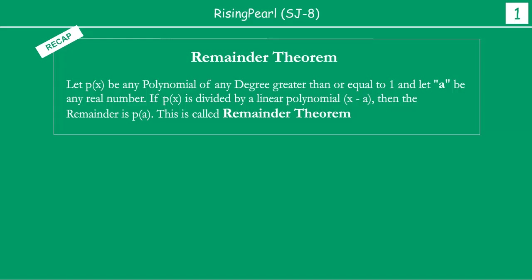Like we did last time, we will start by discussing what the remainder theorem is. The remainder theorem states that agar aapko ek polynomial dee jati hai p(x) such that it is of any degree greater than or equal to 1, and maan lijiye a is any real number, then agar if you divide the polynomial p(x) by a linear polynomial x minus a, the remainder will be given by the value of polynomial p at x equal to a.